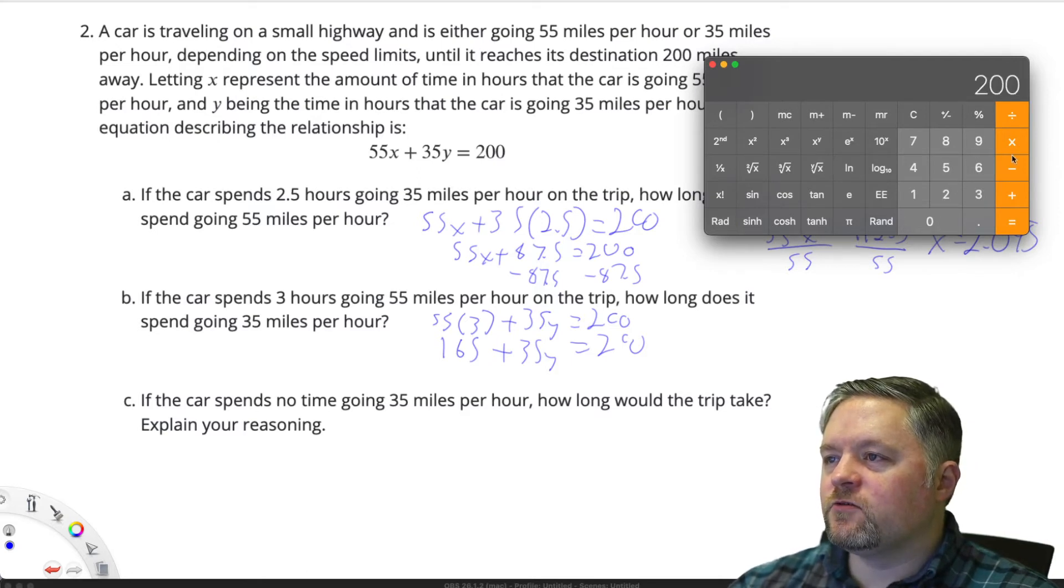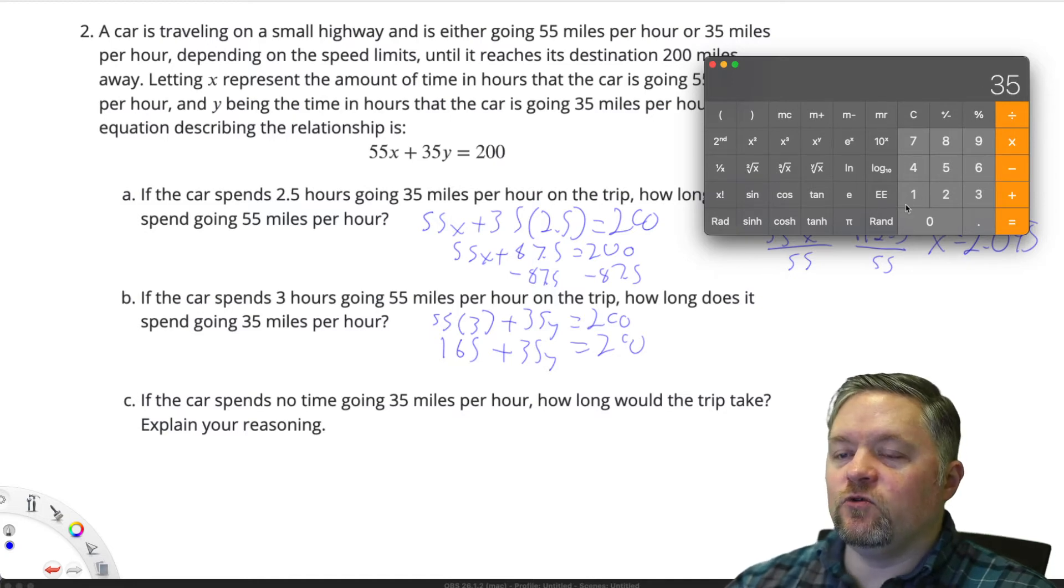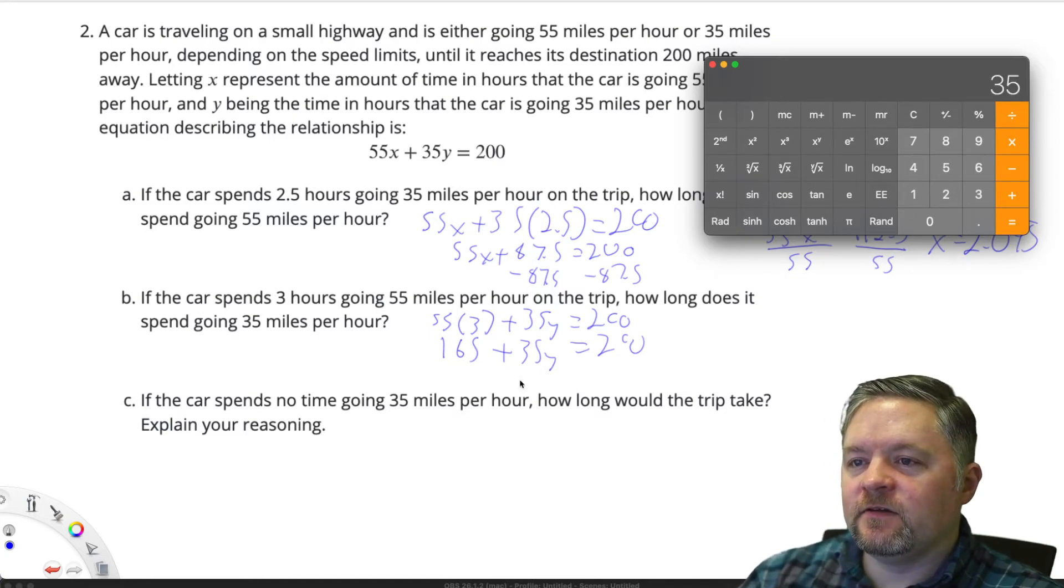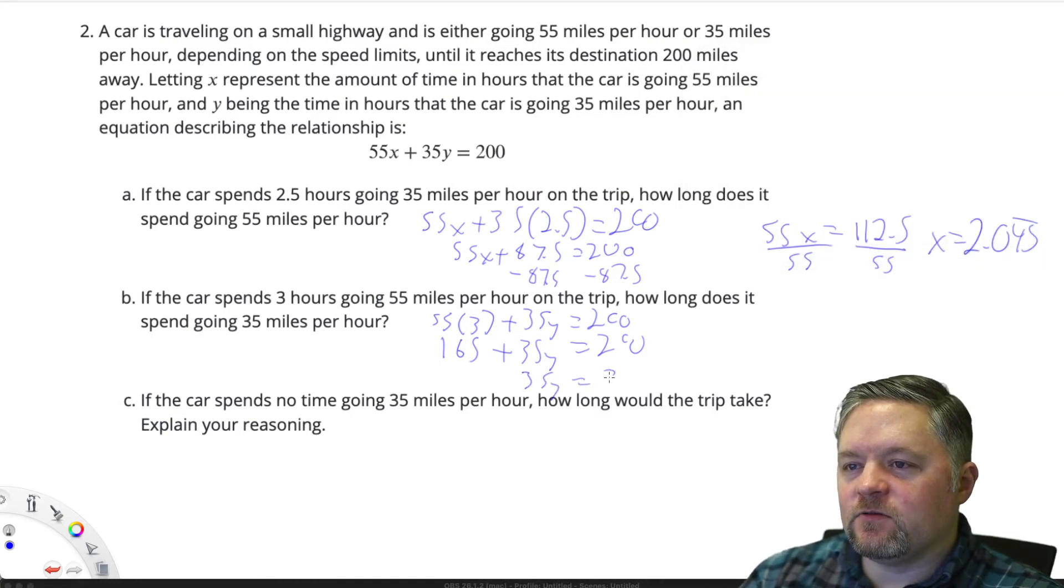200 subtract 165 is 35. 35y equals 35, y equals 1.